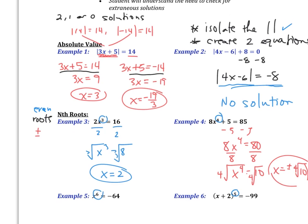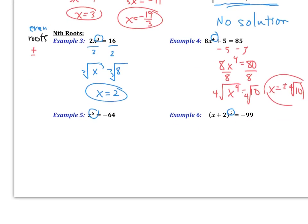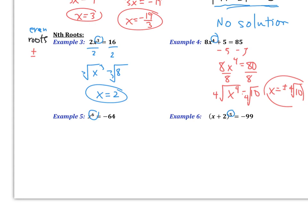Moving on to example five — there are potentially six roots. I don't have to worry about getting x to the sixth by itself; it's already done. So I'm going to go right into taking the sixth root of both sides, but I cannot take the sixth root of a negative number. We are only dealing with real roots, so since I can't take the sixth root of a negative number, this one has no solution.